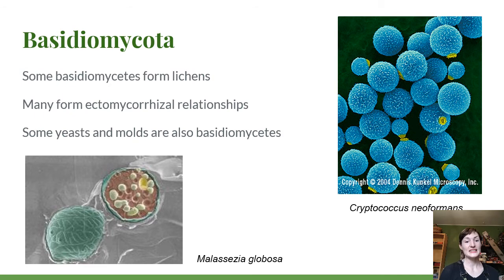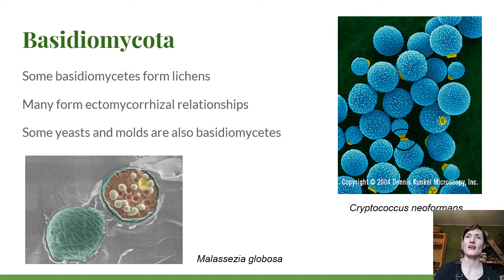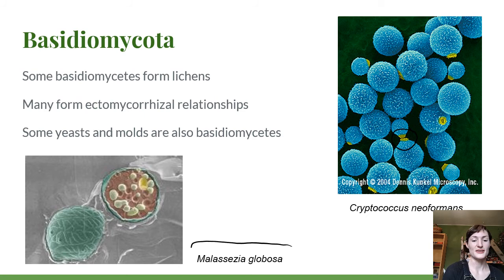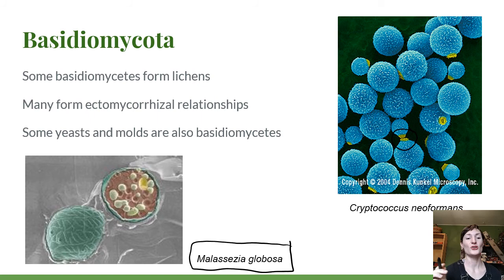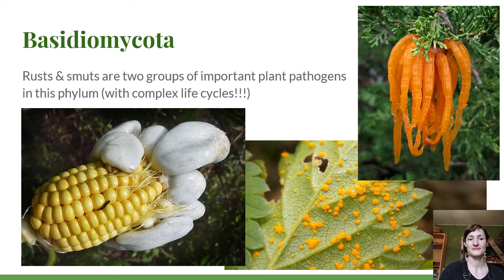Some yeasts and molds are also basidiomycetes. Cryptococcus neoformans, shown with bud scars from budding reproduction, can cause infections — usually only in immunocompromised individuals — but can cause serious problems like encephalitis. Malassezia globosa is one of the most common causes of dandruff — it's a smut that lives next to sebaceous glands, eating the oils they secrete. Its metabolic byproducts trigger an allergic reaction in some people, causing dandruff, or dandruff can result from overproduction of those fungal cells on your scalp.